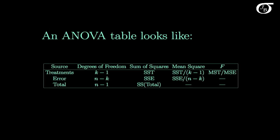The end result is going to be an ANOVA table that looks like this. The names might change a little bit depending on the source. For instance, treatments is sometimes called group or between, and error might be called within or other quantities like this, but overall your ANOVA table looks quite a bit like this. One of the most important quantities in the table is this F statistic. This F statistic is going to yield a p-value, and from that we're going to reach a conclusion.